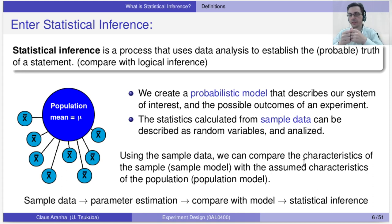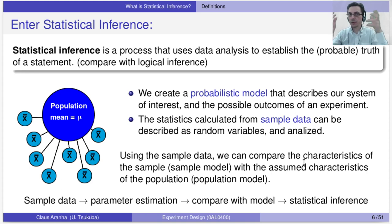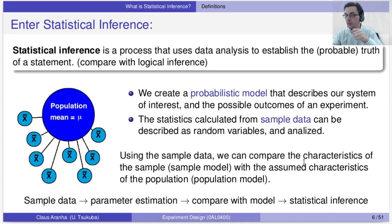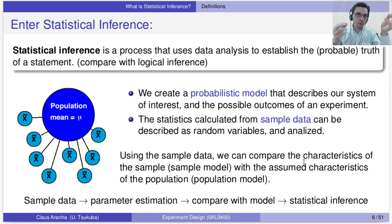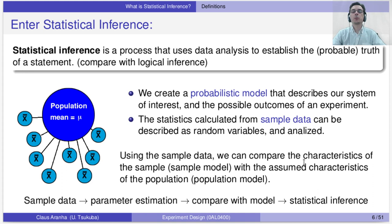Then we can say: okay, this model really describes the system I'm trying to study — or no, this model does not describe it. Maybe the model is 'the factory is broken,' or 'the factory is operating normally.' For instance, based on the model the factory is operating normally — is the statistic consistent with this model? That's the question we answer with statistical inference.